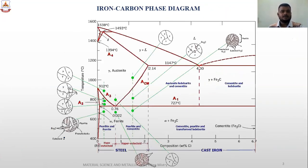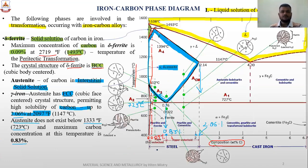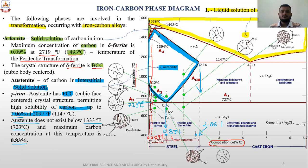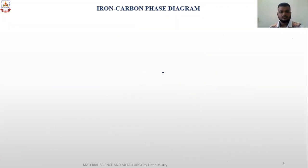So at this point of time we have shown three different regions. The first one is your liquid region, the second one is your delta ferrite region, and the next one is your gamma region. Now we are looking forward to the other regions.